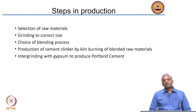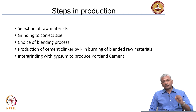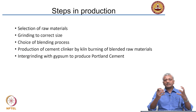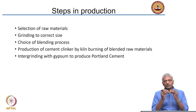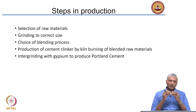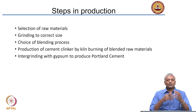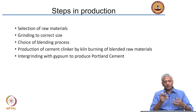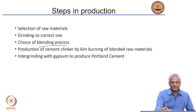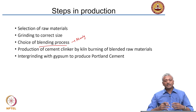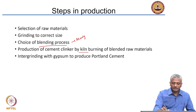What are the production processes involved? First, you need to select the correct raw materials. You need to break them down into very fine scale powder. After breaking them down into a powder, you mix or blend them together, and then you burn them in a kiln.